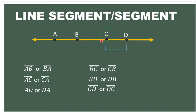So these are the line segments we can identify in this example: line segment AB or BA, line segment AC or CA, line segment AD or DA, line segment BC or CB, line segment BD or DB, and line segment CD or DC. So we have six line segments.